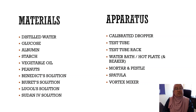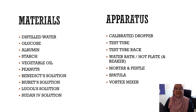These are the materials and apparatus that will be used in Experiment 1. Materials are: distilled water, glucose, albumin, starch, vegetable oil, peanuts, Benedict's solution, Biuret solution, Lugol's solution, and Sudan IV solution. For the apparatus: calibrated dropper, test tube, test tube rack, water bath or hot plate, mortar and pestle, spatula, and vortex mixer.